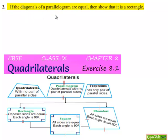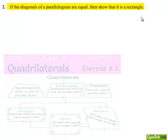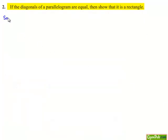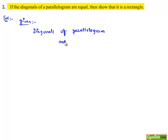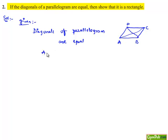Moving on to a second question: if the diagonals of a parallelogram are equal, then show that it is a rectangle. Now moving on to a solution, let us note the given information. Diagonals of a parallelogram are equal — let us assume a parallelogram ABCD in which AC and BD are the diagonals. It is given that AC is equal to BD, and we need to prove that parallelogram ABCD is a rectangle.